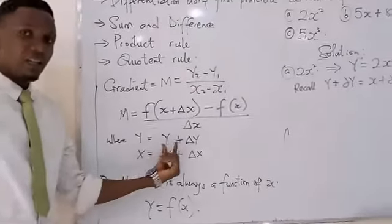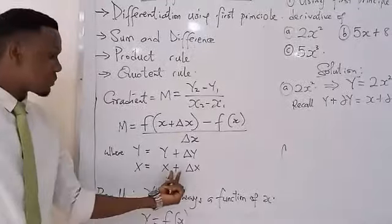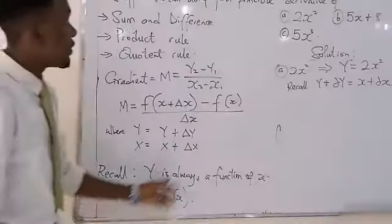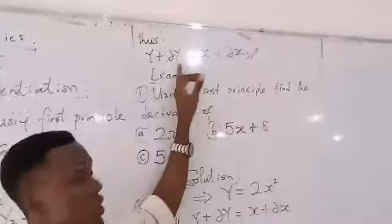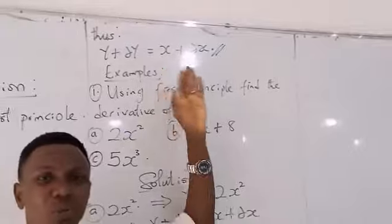In Y, it's Y plus change in Y. Y for X is X plus change in X. When you combine, it gives us Y plus change in Y equal to X plus change in X. This is what you're going to be using in solving.